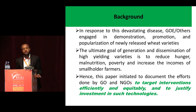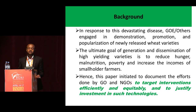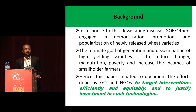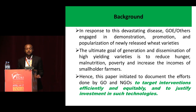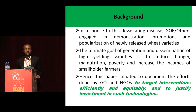The ultimate goal of generating and disseminating high-yielding varieties is to reduce hunger, malnutrition, and poverty, and to increase the incomes of smallholder farmers. This paper is initiated to document the efforts done by government organizations and NGOs to promote interventions efficiently and equitably, and to justify investment in such technologies.